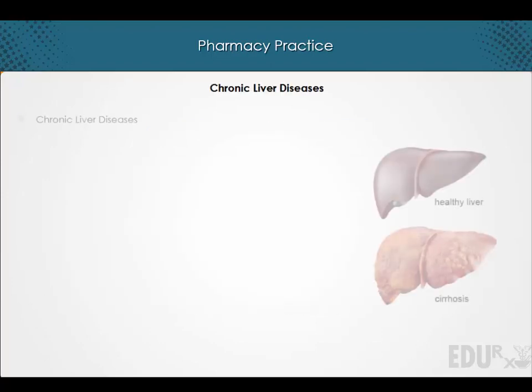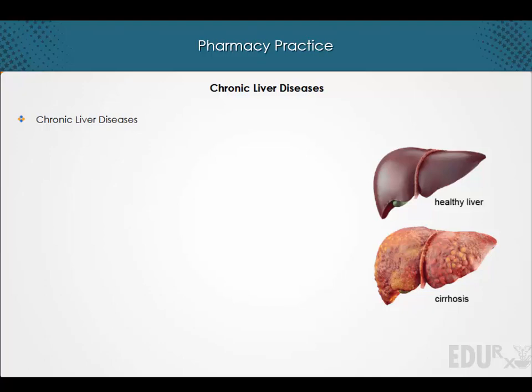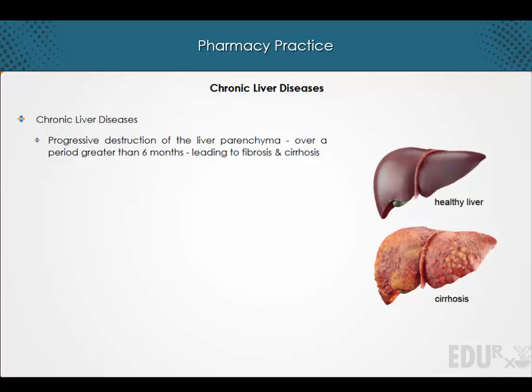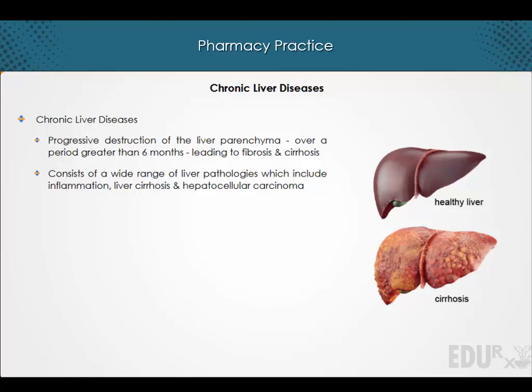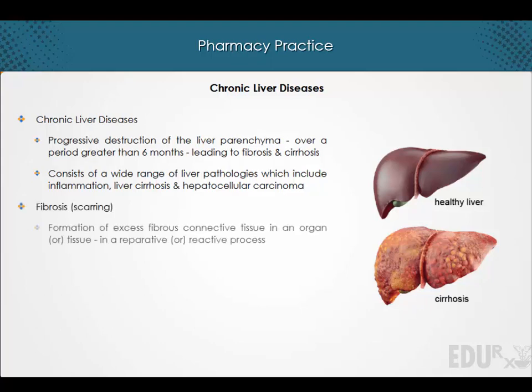Hi and welcome to a lecture on Chronic Liver Diseases. Chronic liver diseases refers to the progressive destruction of the liver parenchyma over a period greater than 6 months, leading to fibrosis and cirrhosis. It consists of a wide range of liver pathologies which include inflammation, liver cirrhosis, and hepatocellular carcinoma. Note that fibrosis refers to the formation of excess fibrous connective tissue in an organ or tissue in a reparative or reactive process.